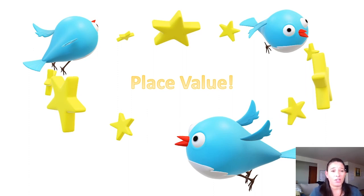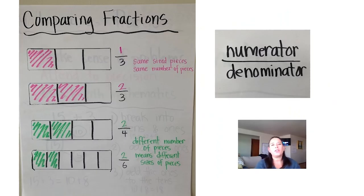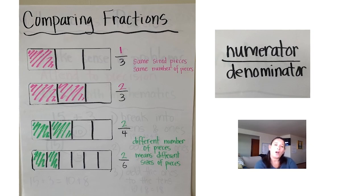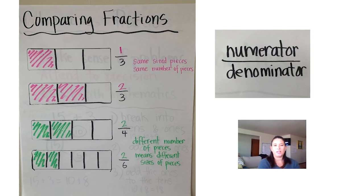Once you're done with step numbers, third graders, your packet this week also has comparing fractions using visual models. You've had a lot of experience comparing whole numbers — fewer than, less than, more than, greater than. Now that we're moving into fractions, we also have to compare which fraction is larger or smaller. On the first example with the two pink bars, I've drawn two bars that are the same size, cut into thirds. On the top bar, one-third is shaded; on the bottom, two-thirds is shaded.